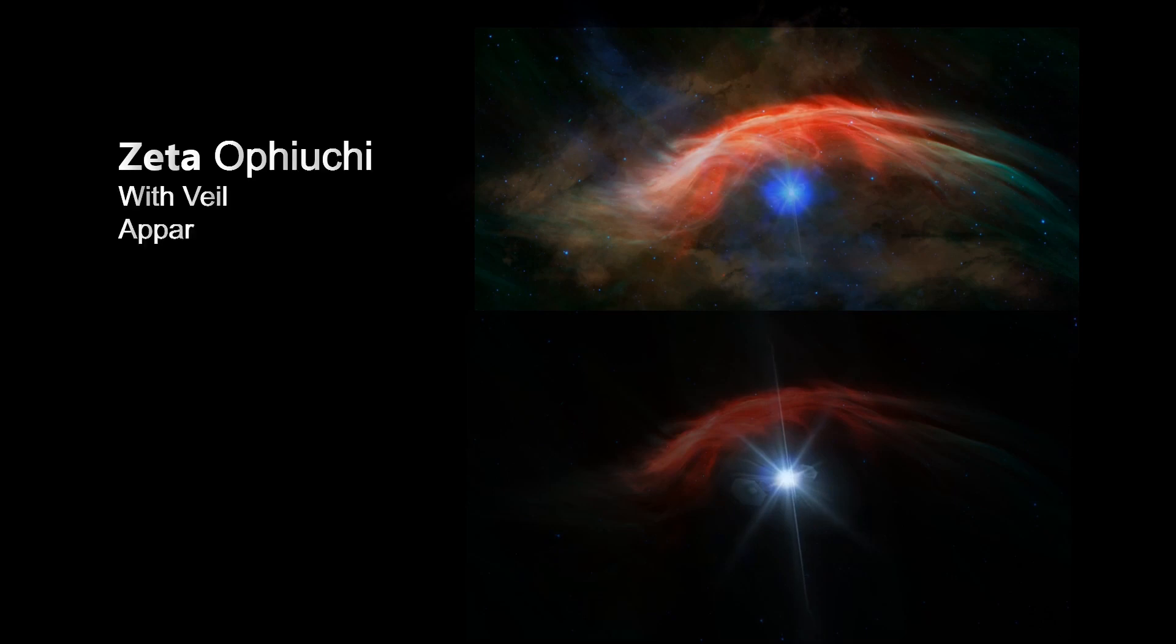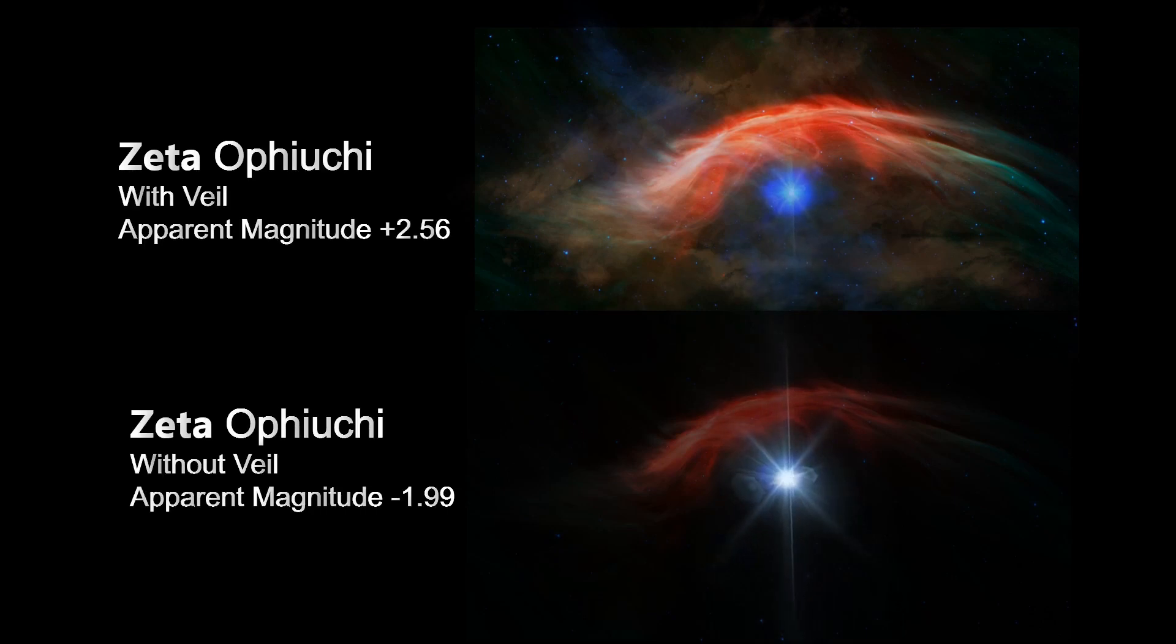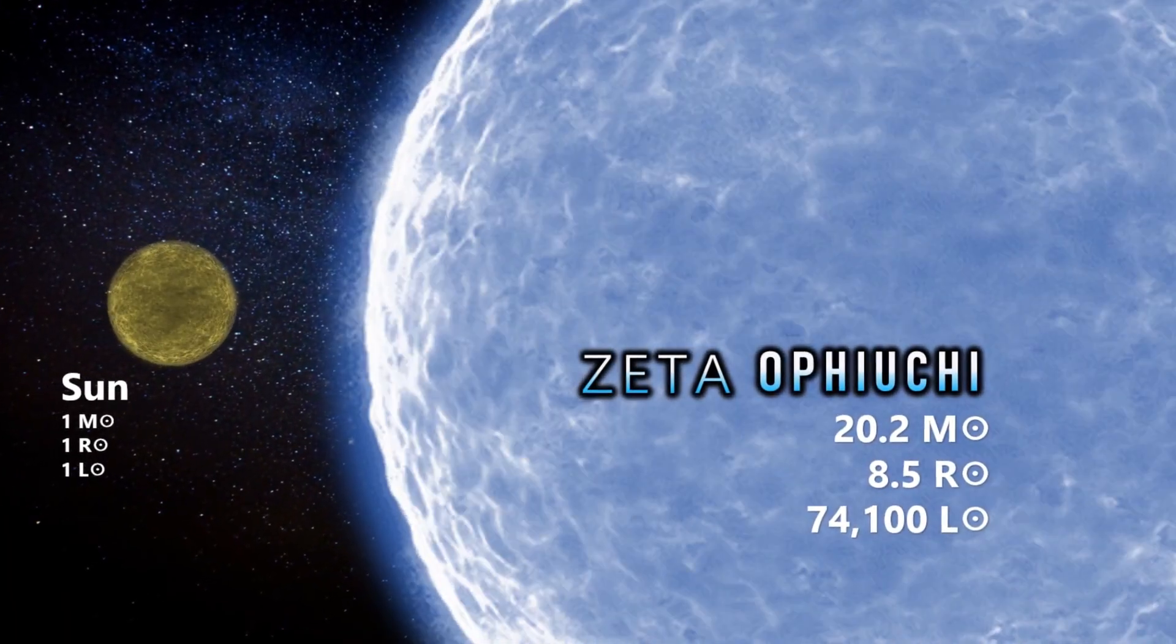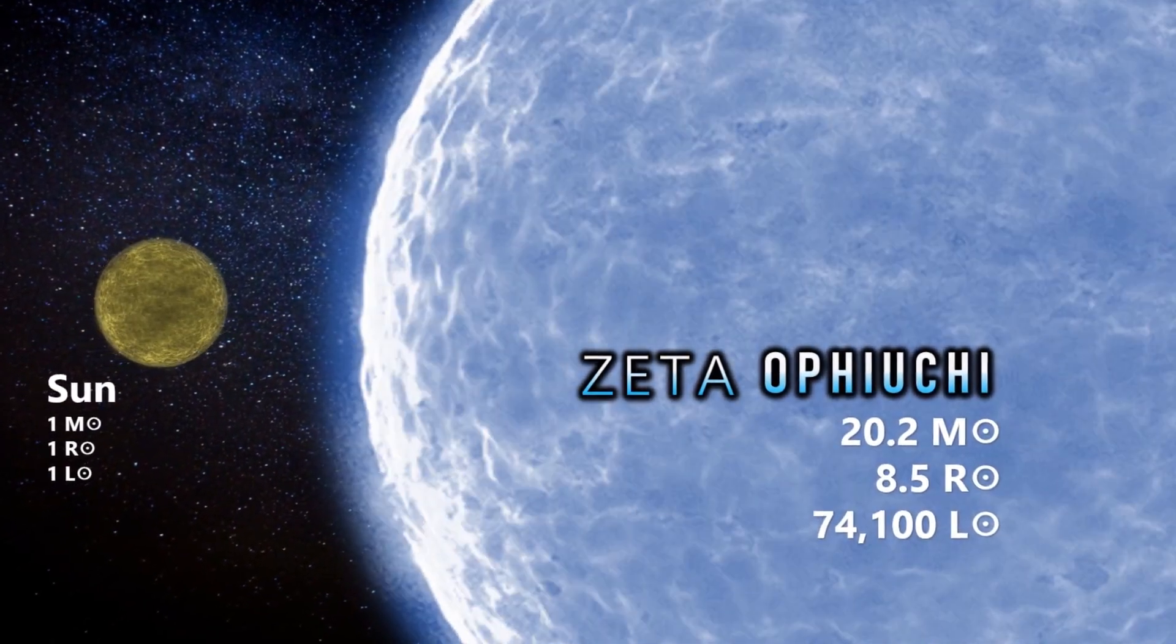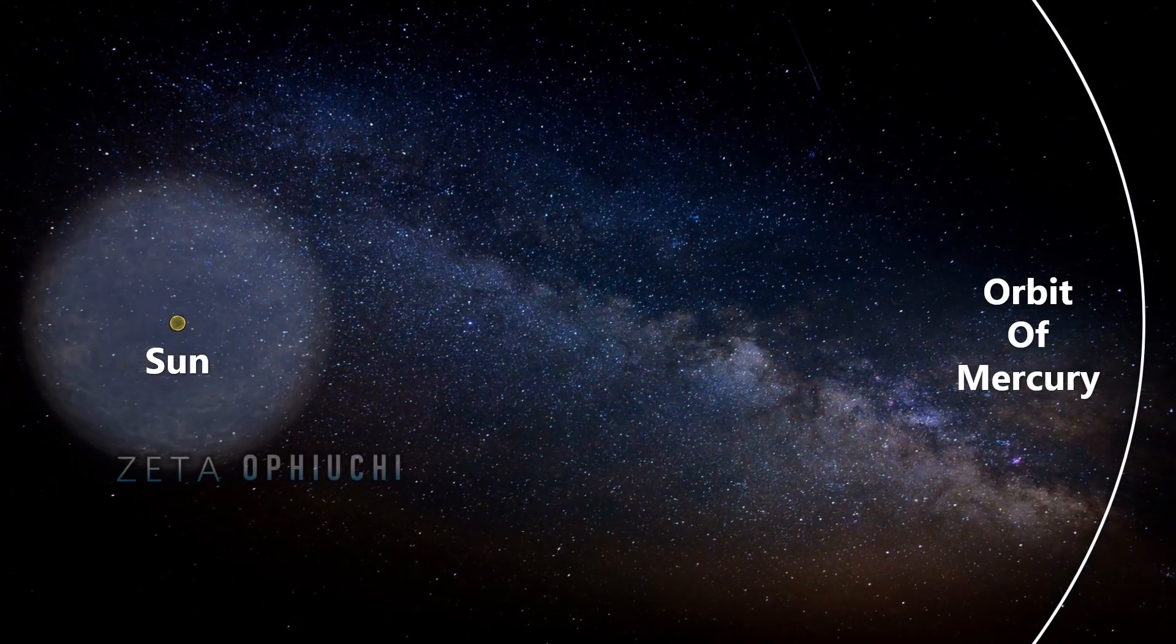Actually, let's not beat around the bush, it would be the most luminous of all, and by some margin indeed. Zeta Ophiuchy is a colossus of a celestial body, as already mentioned, more than 19 times the sun's mass, and it's expanded to 8 times the solar radius.